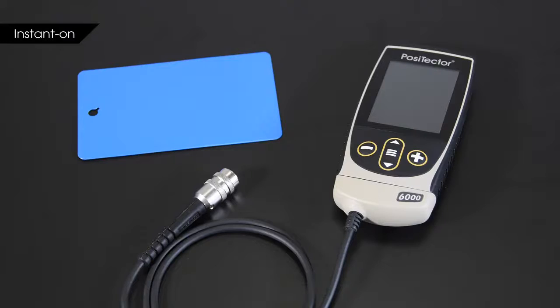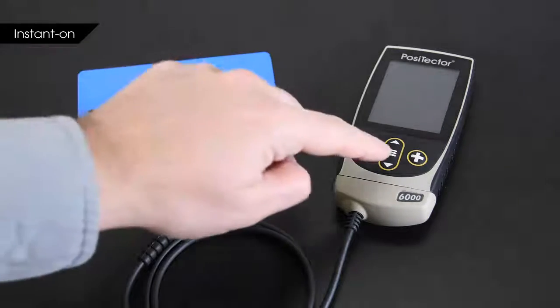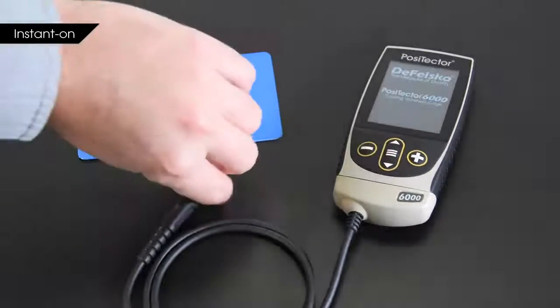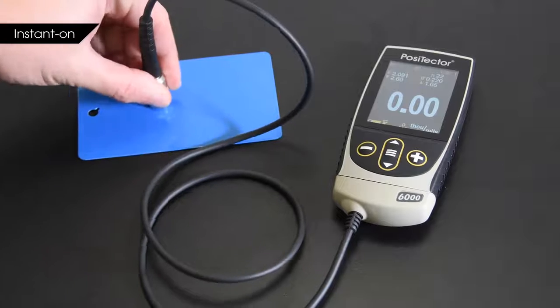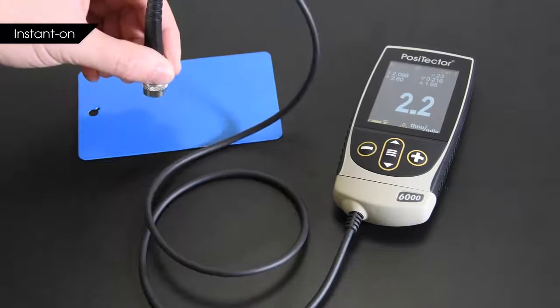The new instant-on feature quickly powers up the gauge and returns to its previous state when the instrument has been off for less than four hours, making inspection even faster.